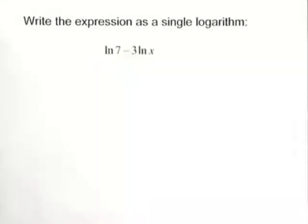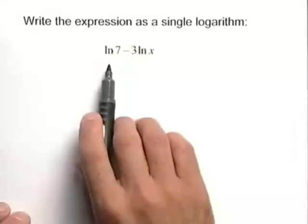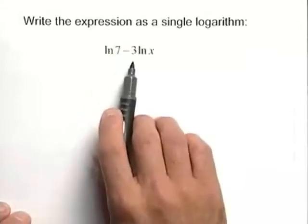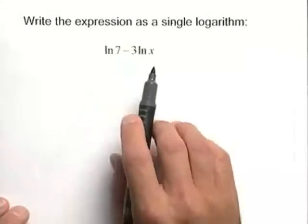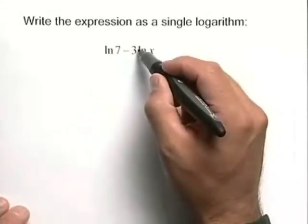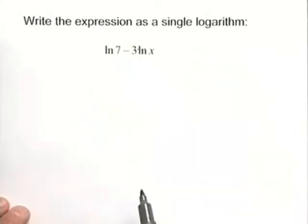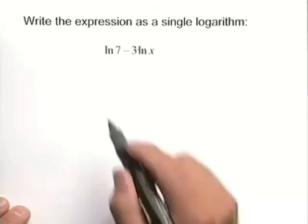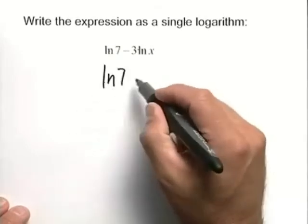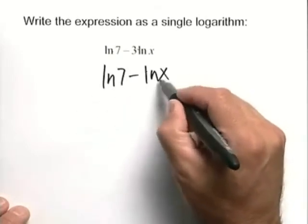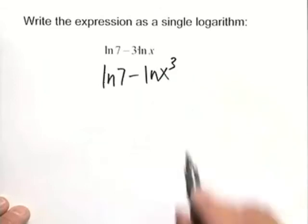Here's another problem using logarithmic properties. We have natural log of 7 minus 3 times the natural log of x. Since we have multiplication of a coefficient out in front, let's rewrite the second term as being the natural log of x to the third power.